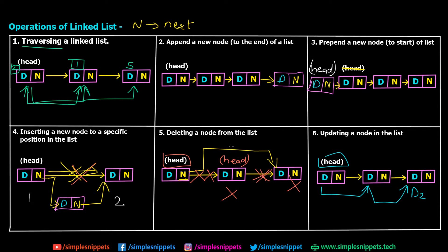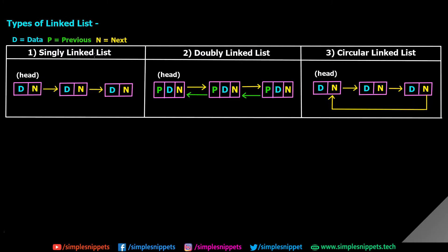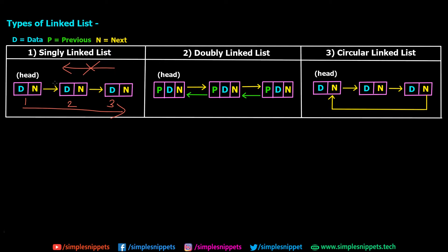Now let's see the different types of linked list, because depending upon the types, the operations also change a little bit. We have three standard types: singly linked list, doubly linked list, and circular linked list. As the name suggests, in a singly linked list we have only one way of traversing — the next node direction. You can go from one to two to three, but you cannot come back because there is no pointer pointing back to the previous node.